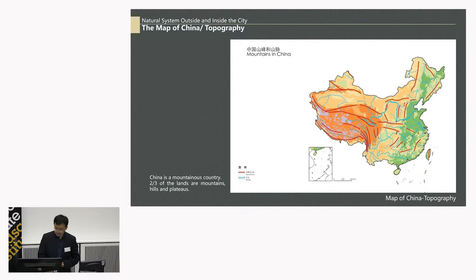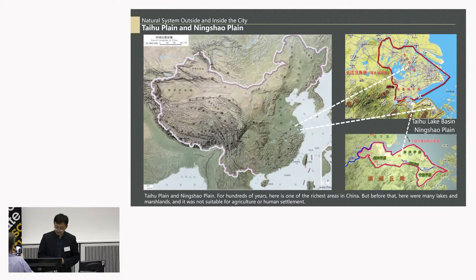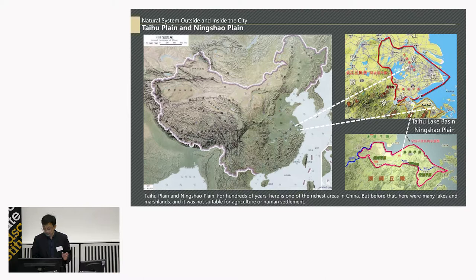As we all know, China is a huge country with a large population. For thousands of years, the land has supported a huge population, but not all parts of China have good natural conditions. For example, in East China, in the Taihu Basin and Ningxiao Plain, for hundreds of years this is one of the richest areas in China. But before that, here were many lakes and marshlands, and it was not suitable for agriculture and human settlements.